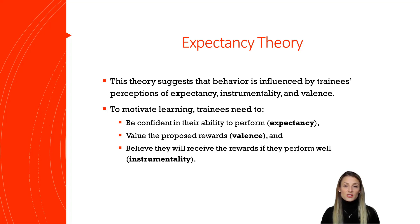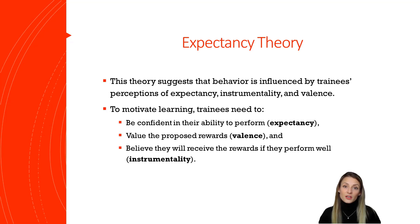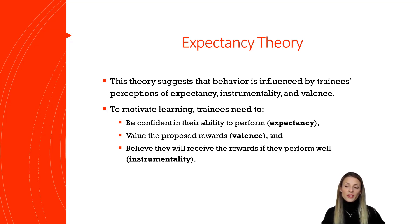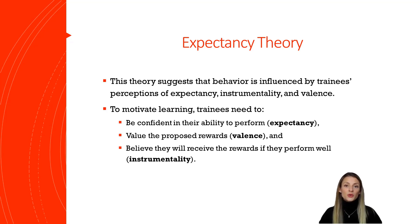Expectancy theory suggests that motivation is impacted by people's perceptions of the situation. First, they need to believe that they can learn to perform some task — what we call expectancy. Like reinforcement theory, this theory also suggests that people should value the outcome attached to the behavior for it to have any motivating power. We call this valence: the degree to which someone values an outcome.